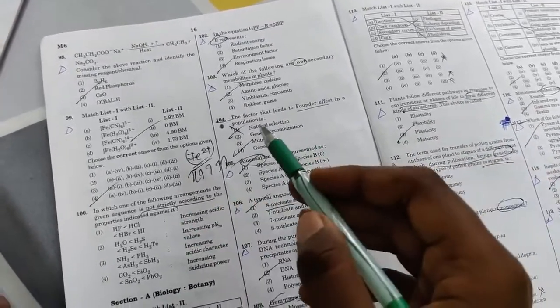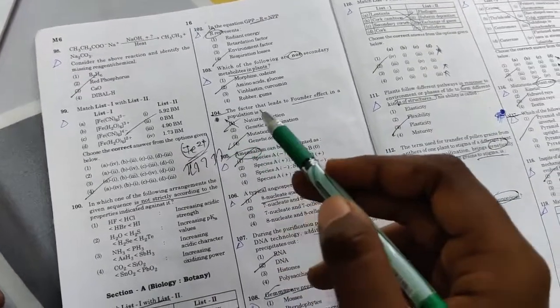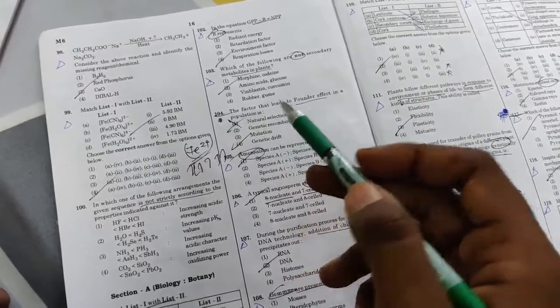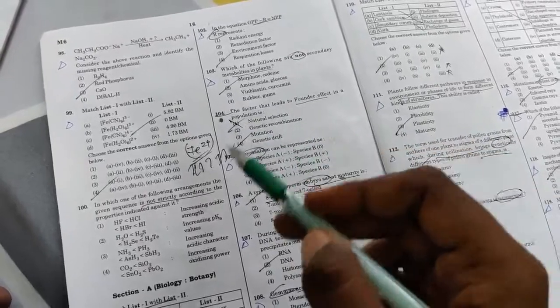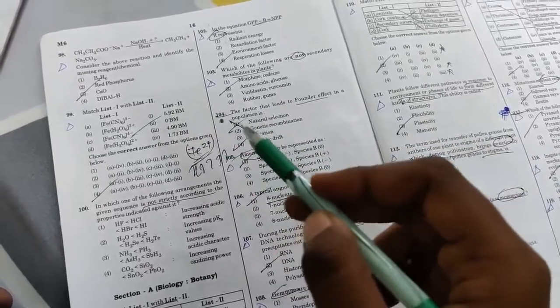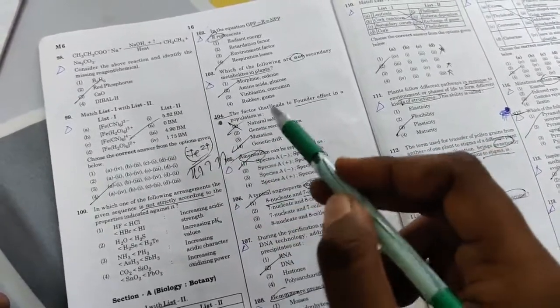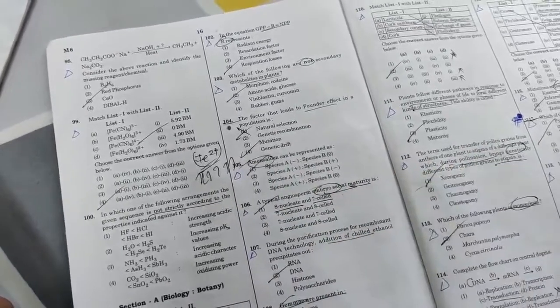The first one - my code was M6. The factor that led to founder effect is in my Aakash package. The direct question was there, and one full paragraph is there. So I gave genetic drift and this one is also correct.